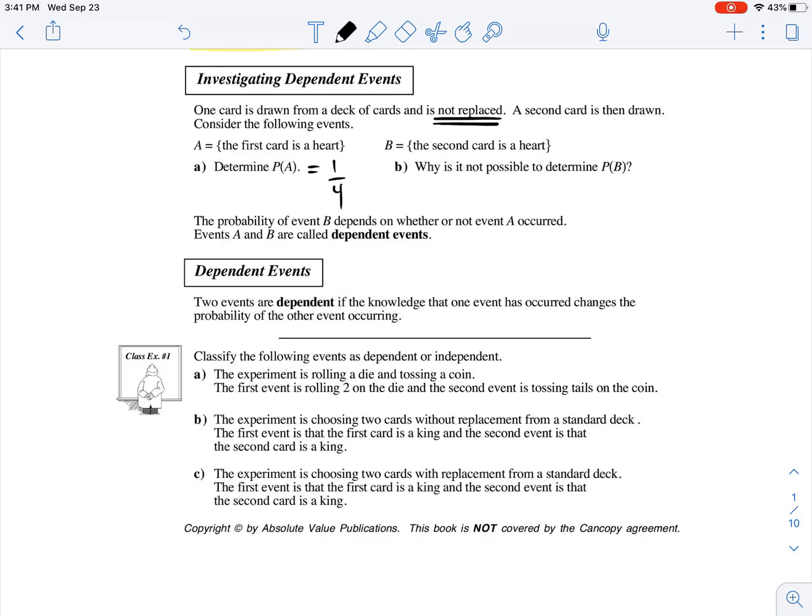So determine the probability that the first one is a heart. Well, that would be 1 over 4, right? Just like before.